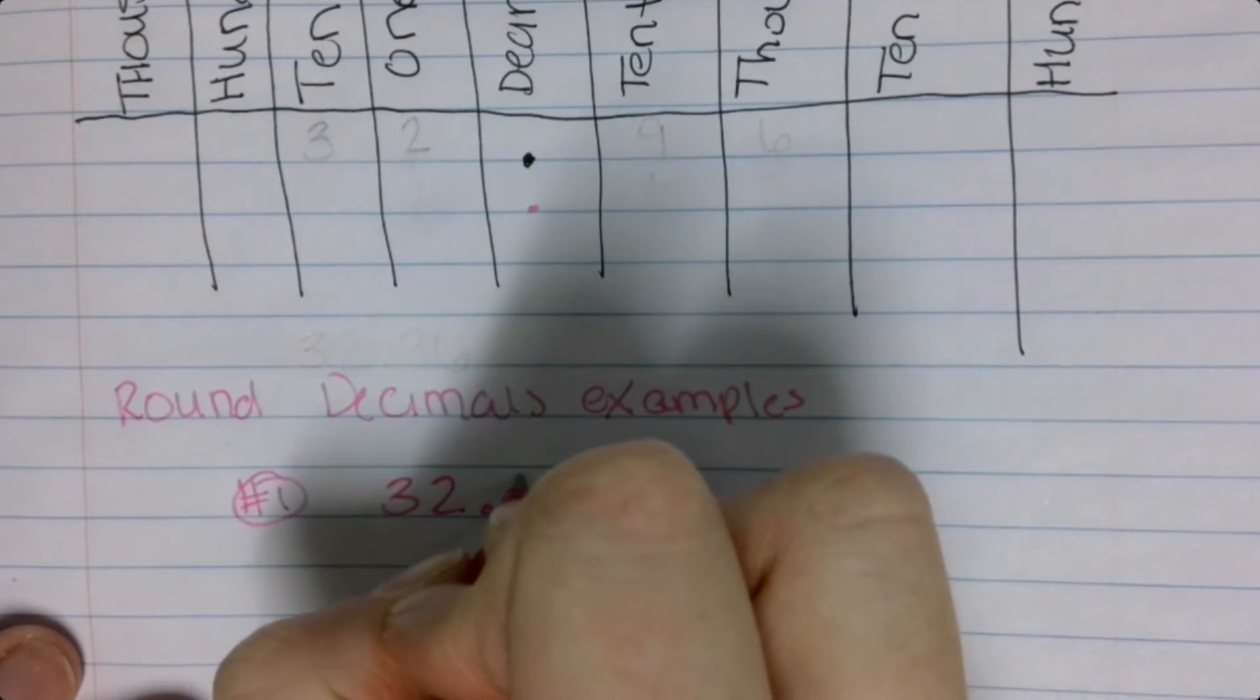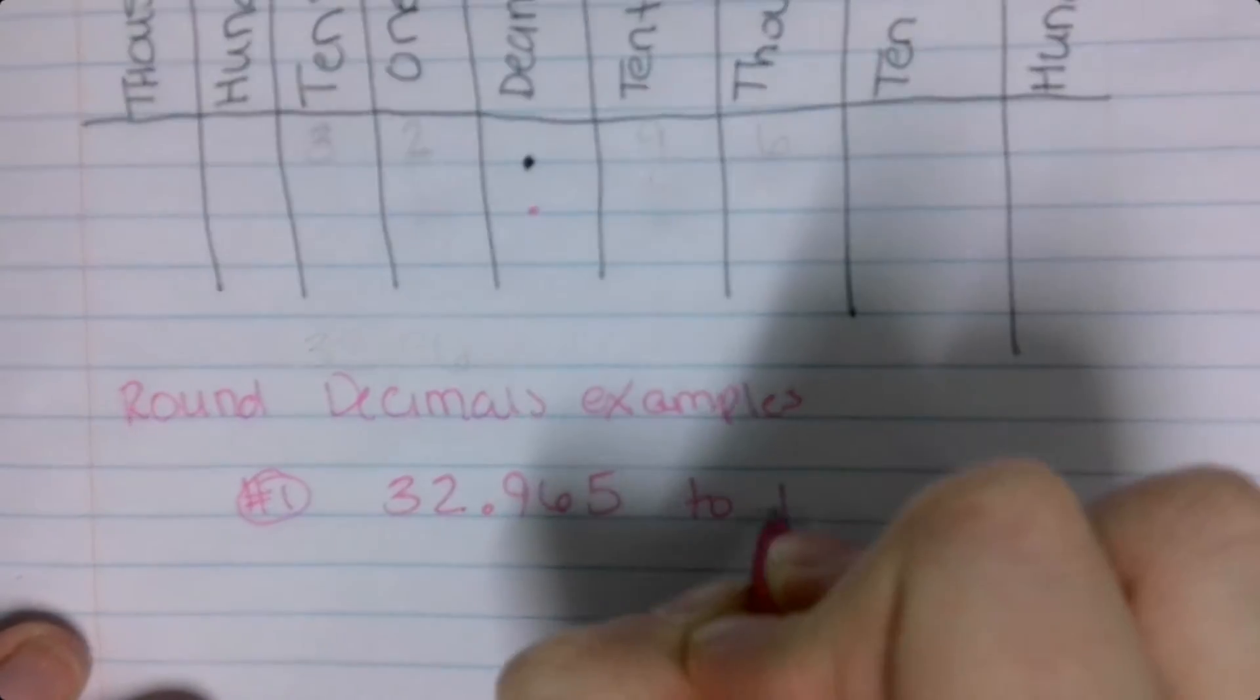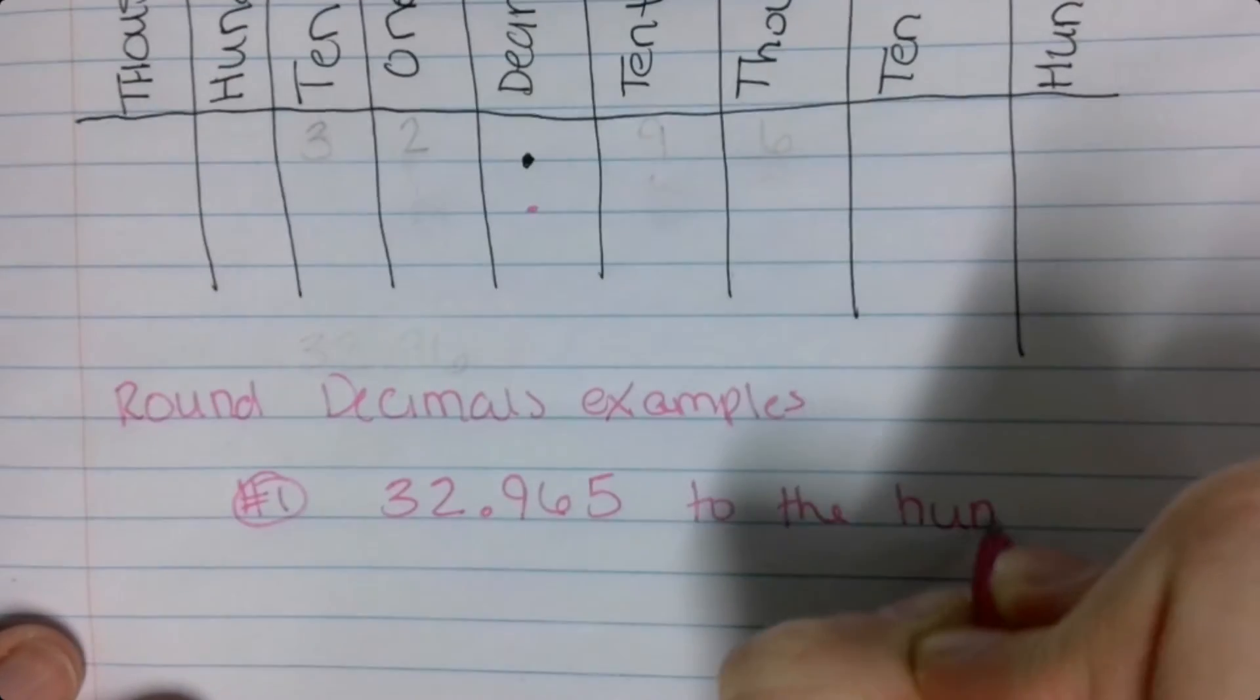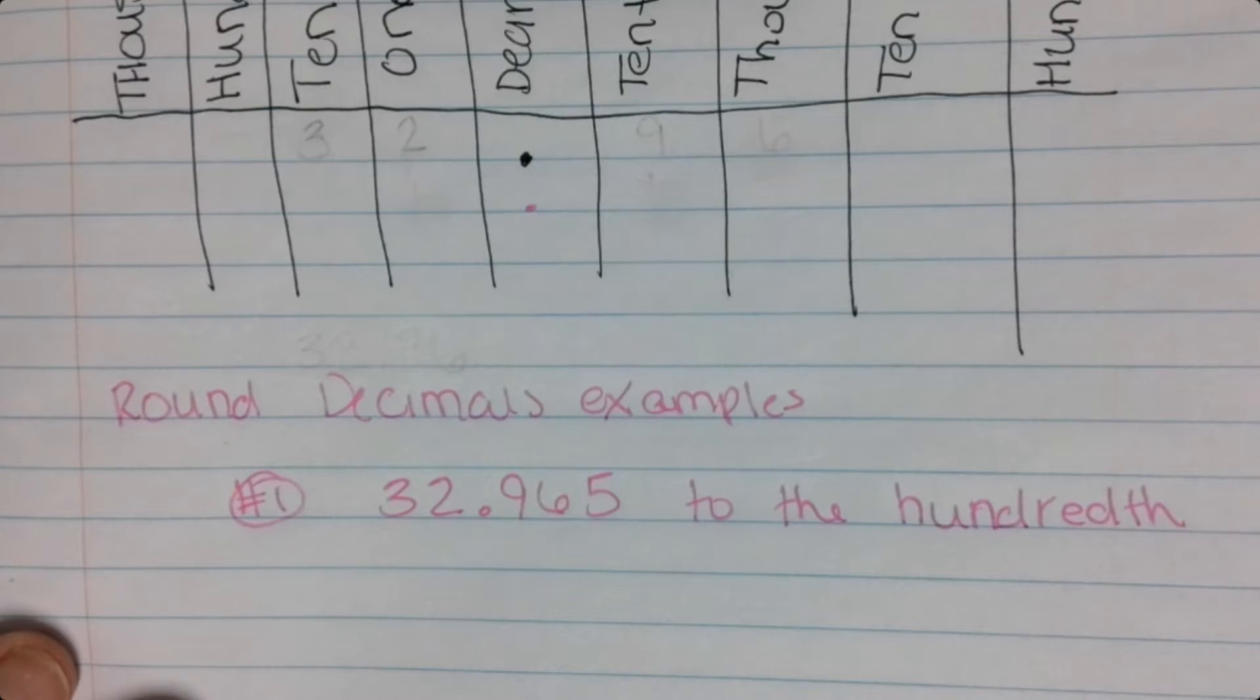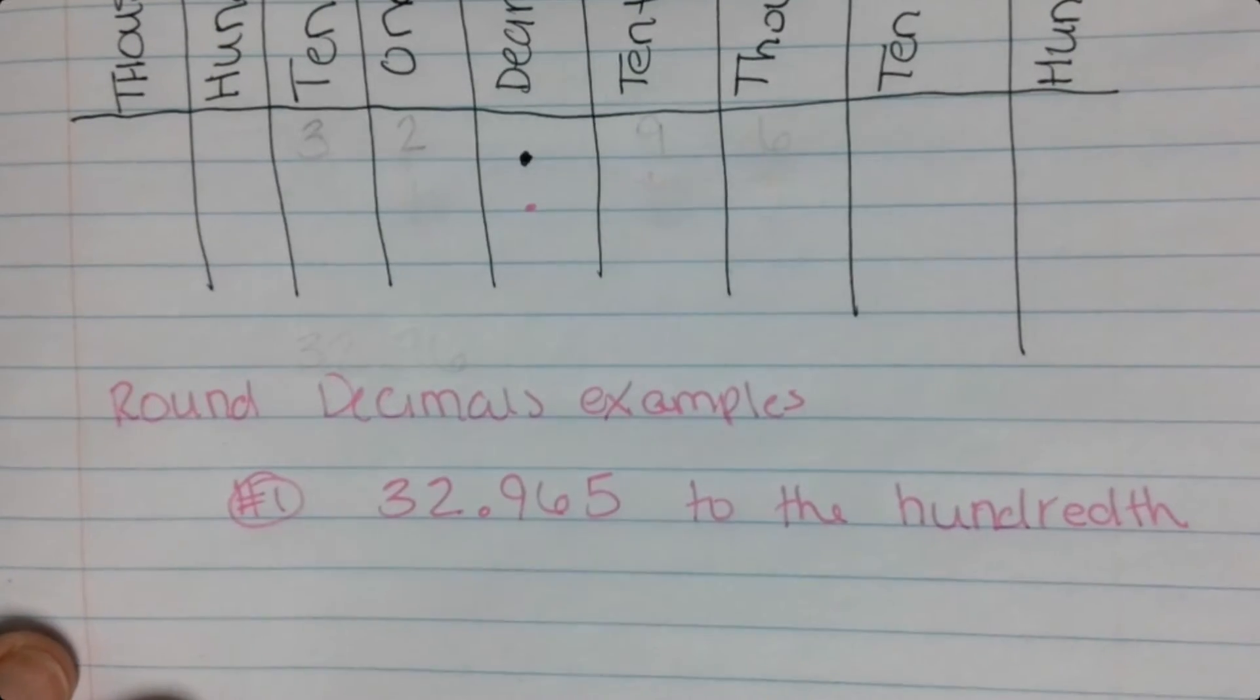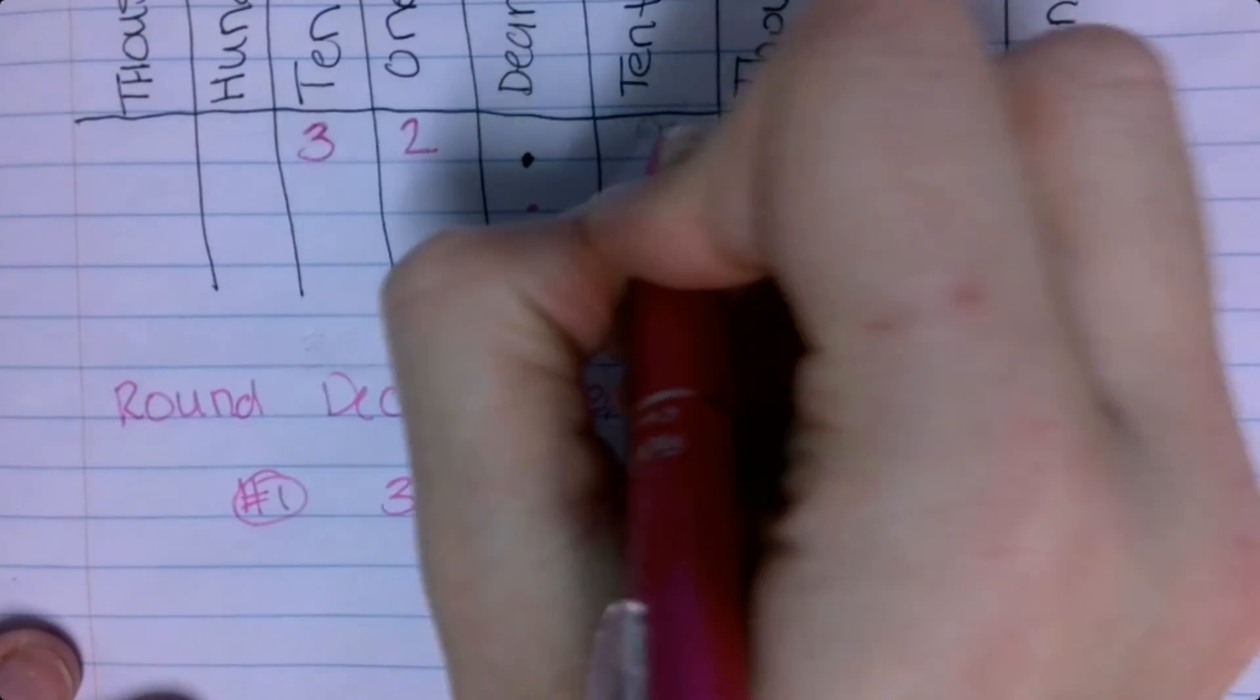So 32.965 to the hundredth, to the hundredth. So again, if you put it in the chart, right? If you're the person that needs to do that, go ahead and do it.